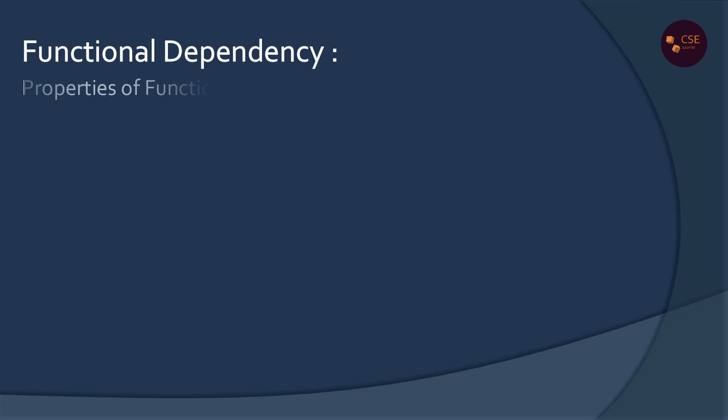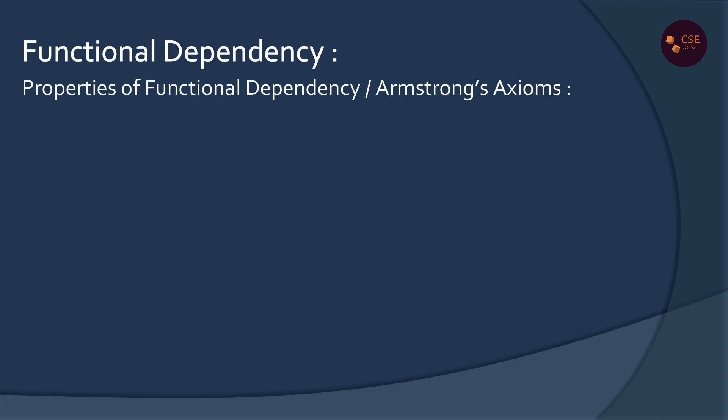Functional Dependencies have properties. This is William Armstrong. These are the Properties of Functional Dependencies, also called Armstrong's Axioms. The properties are Reflexivity, Augmentation, and Transitivity — called RAT rules.